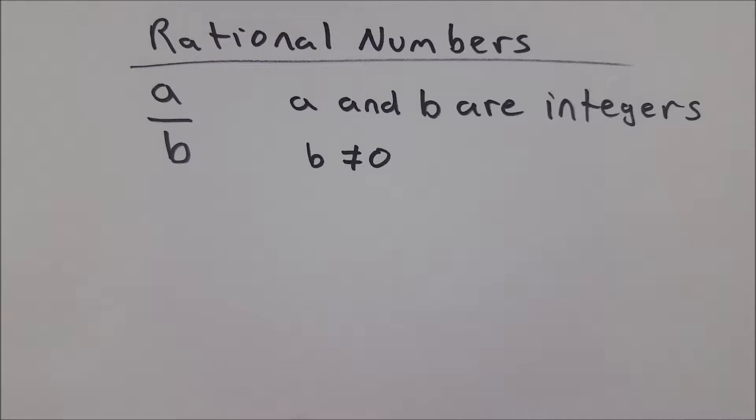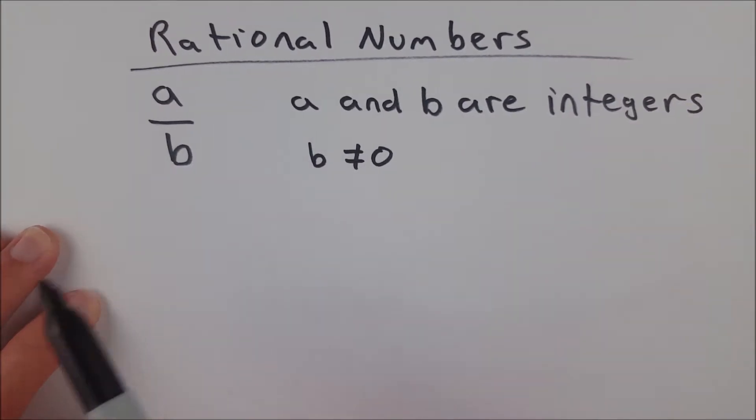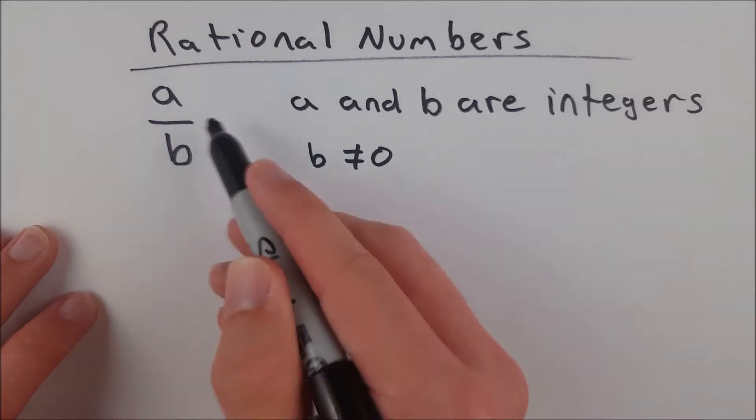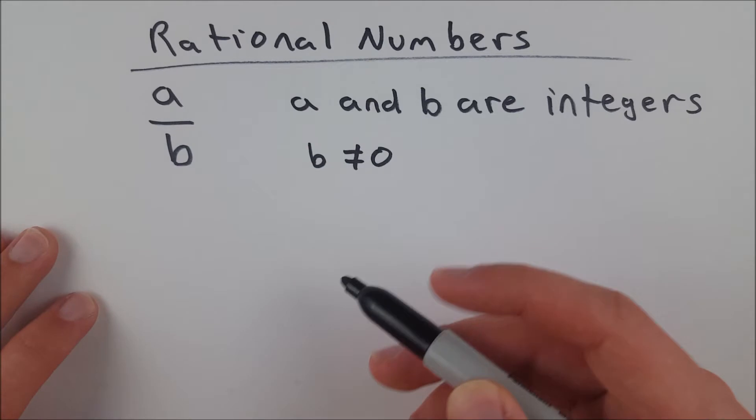That's numbers like negative 2, negative 1, 0, 1, 2, all the way up and down from negative infinity to positive infinity. And B can't equal 0 because we absolutely cannot be dividing by 0. That's, of course, what this is, A divided by B. It's a fraction A over B.